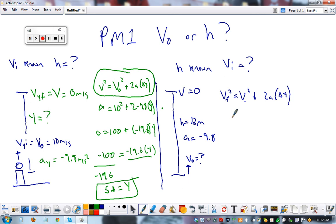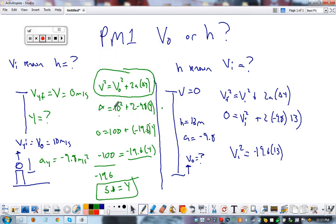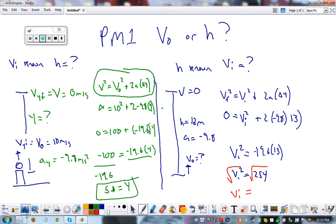That one. Zero equals I don't know plus 2 negative 9.8 times our height is 13. I'm going to do some algebra. Velocity initial squared equals negative 19.6 times 13. Hold on. This equals velocity initial squared equals 254. Last step. Don't forget it. Square root both sides. Velocity initial equals root 254. 15.9 meters per second.